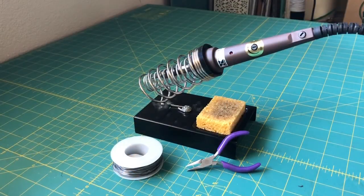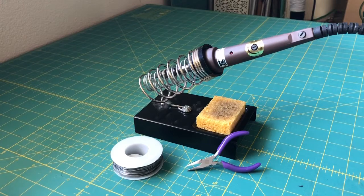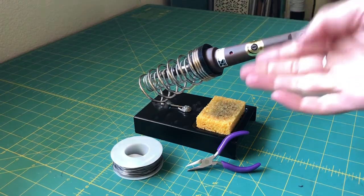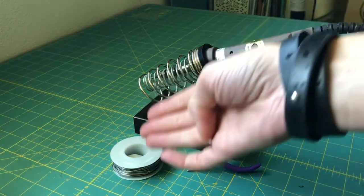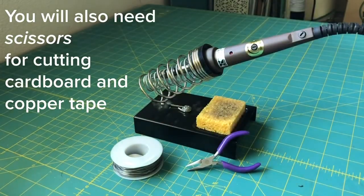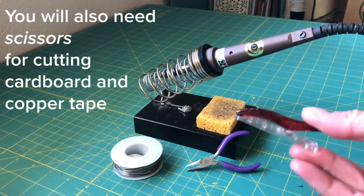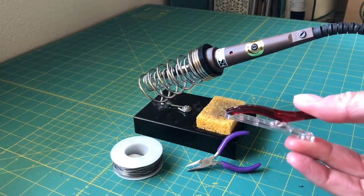The tools that we'll be using for this project is a soldering iron. I like to use mine with a wet sponge, some needle nose pliers, and some solder. Optionally you can use a clip just to secure the battery.